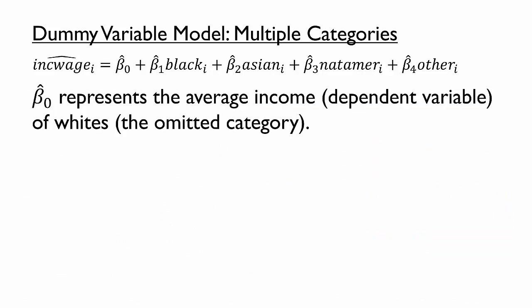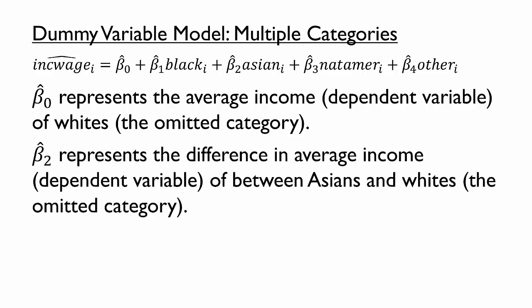First, beta 0 hat, the intercept, represents the average of the dependent variable for the omitted category, in this case the average income of whites. Second, the coefficient on a dummy variable represents the difference in the average of the dependent variable between the category indicated by that dummy variable and the omitted category, in this case the income difference between Asians and whites.